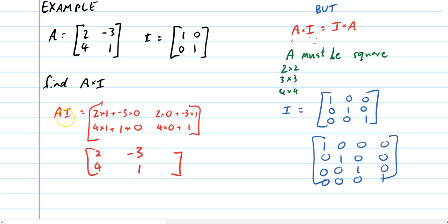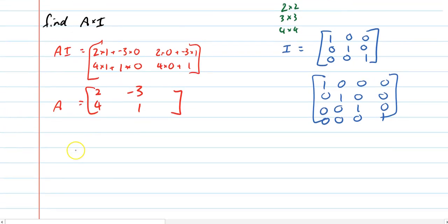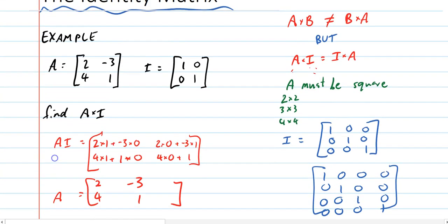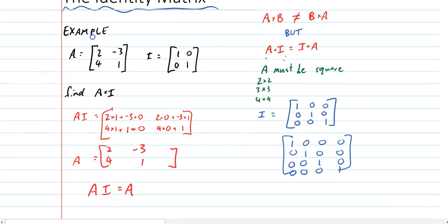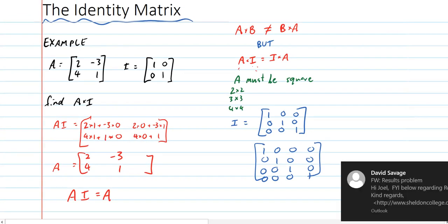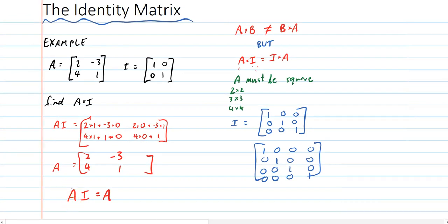So A times the identity matrix is equal to A. And that's sort of the big payoff here. A times the identity matrix is equal to A. Now, that might not seem overly interesting, but it's kind of the same revelation that a year 1 might make when they realize that 7 times 1 is equal to 7, and so is 12 times 1 is 12, so is 101 times 1 is 101. The identity matrix is pretty much the equivalent of 1 when it comes to multiplying numbers.